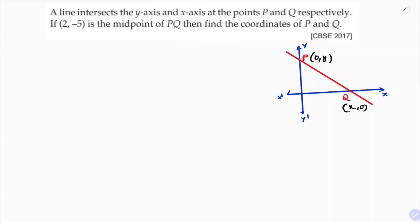If 2 comma minus 5 is the midpoint of P and Q, so this P and Q midpoint I'll take as M. The value is 2 comma minus 5.